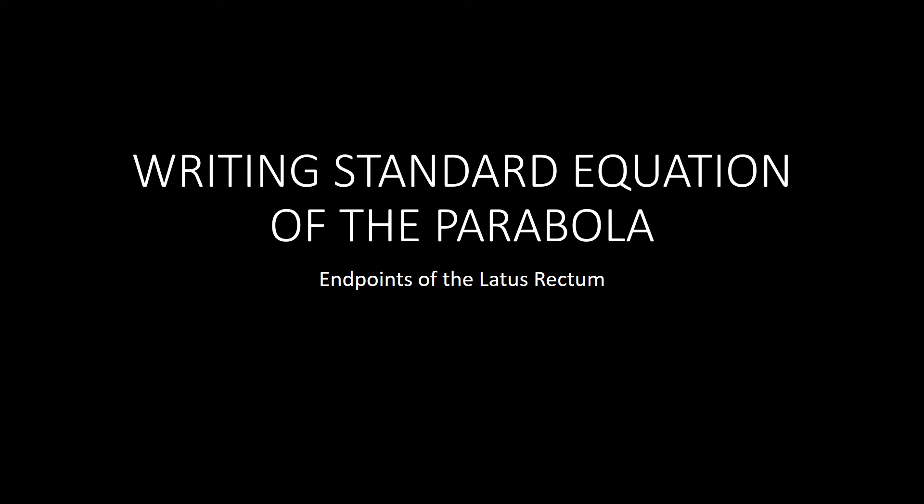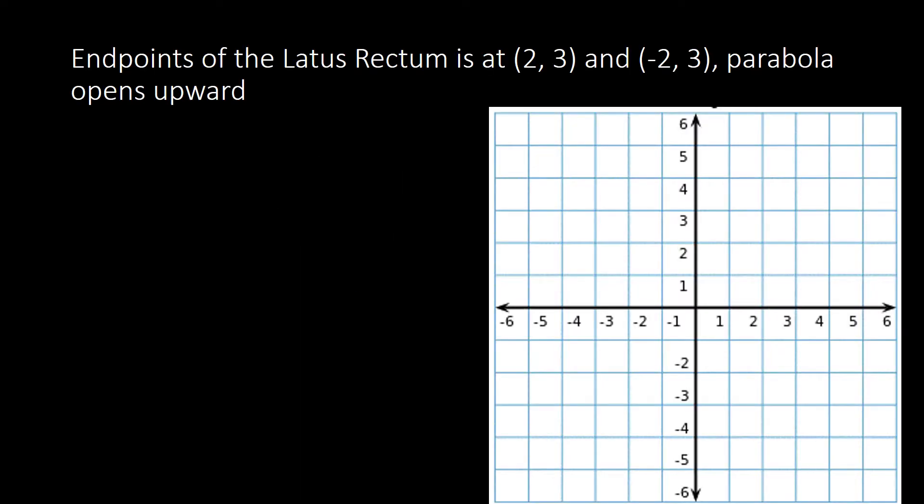We are going to learn how to write the equation of a parabola given the endpoints of the latus rectum. We are given here the endpoints of the latus rectum at (2, 3) and (-2, 3).